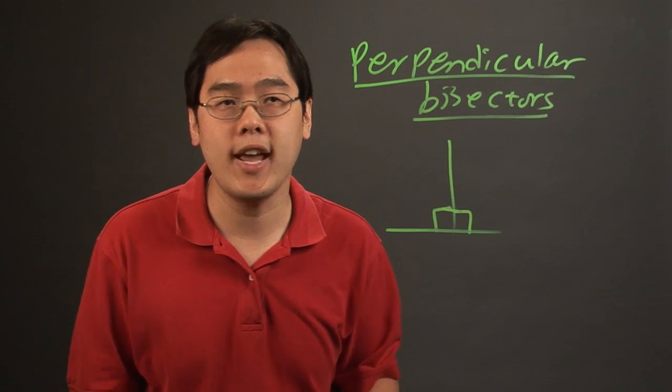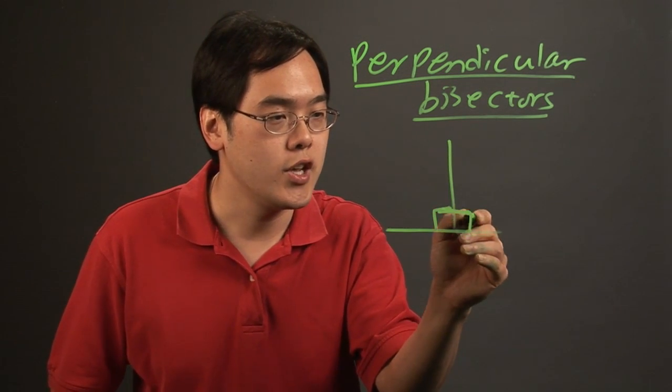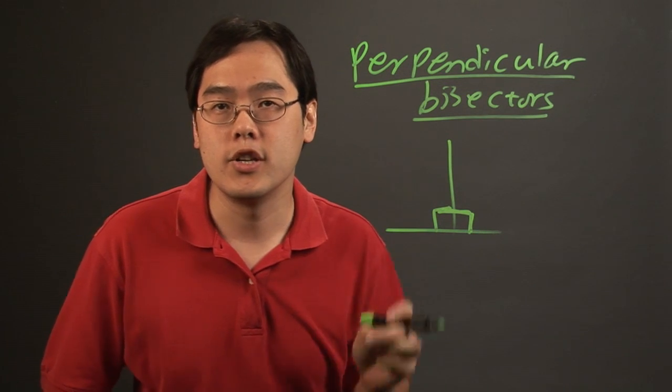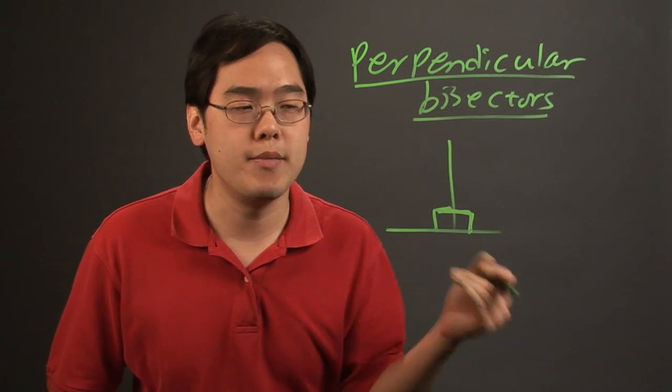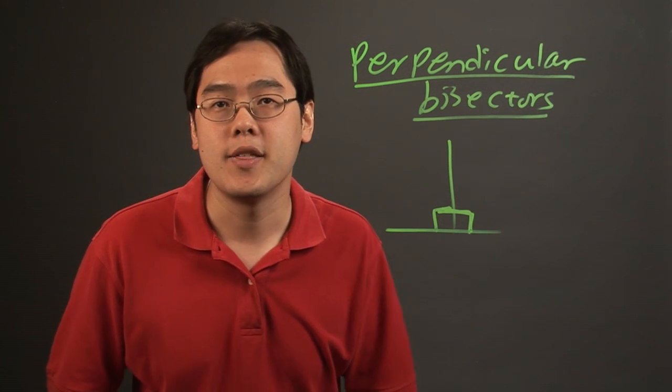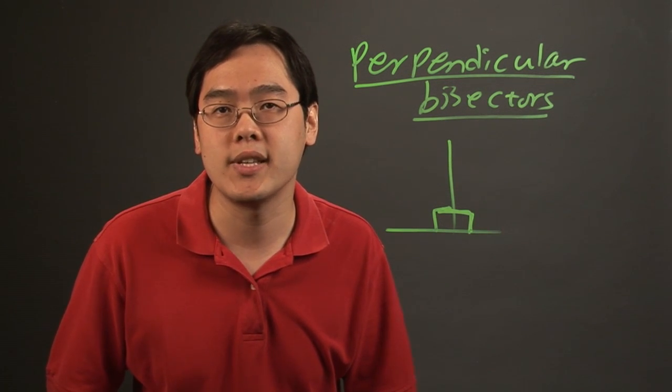So when you're talking about finding the measures of angles of perpendicular bisectors you really want to keep that in mind going forward. You do need a little more additional information, specifically the measures of the angles that are formed. So I'm Jimmy Chang and that's a brief discussion on how to find the measures of angles with perpendicular bisectors.